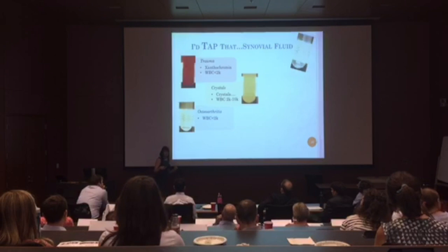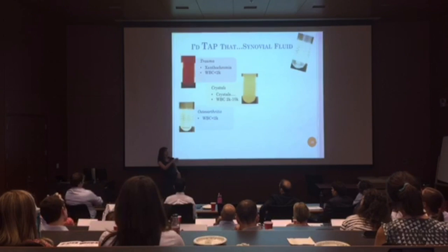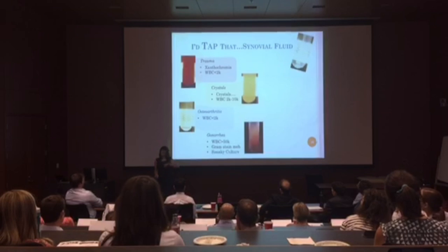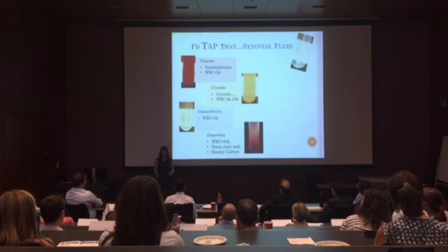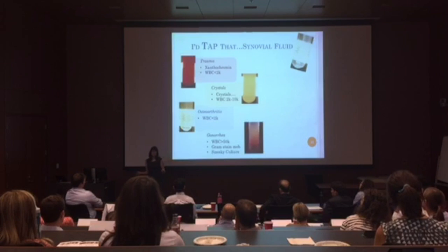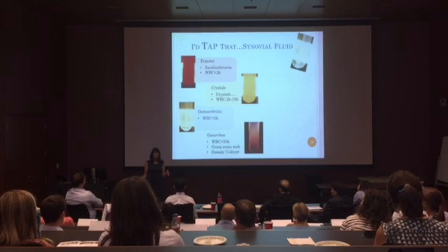Osteoarthritis is non-inflammatory, with few white blood cells, and the synovial fluid looks pretty healthy — similar to normal synovial fluid. Gonorrhea, on the other hand, is going to produce pretty nasty synovial fluid — bloody, with pus and tens of thousands of white blood cells. But if you gram stain it, you may not see gonorrhea, and even if you culture it, it may not grow — it only has about a 50% chance of growing out in culture. Gonorrhea is a sneaky organism.